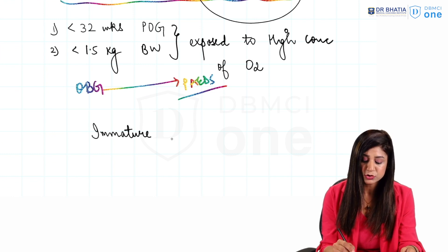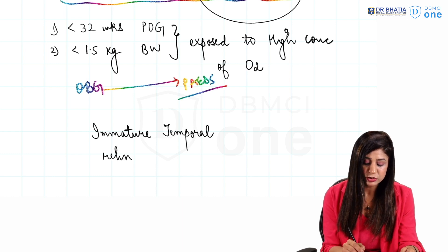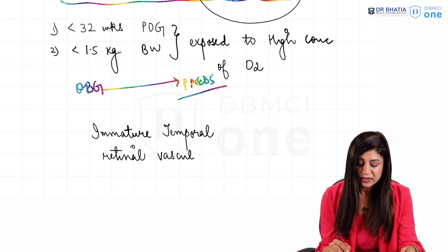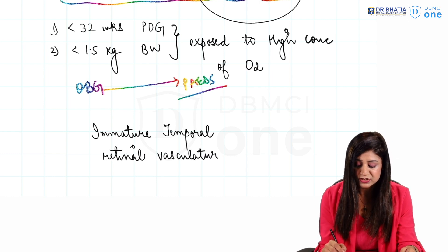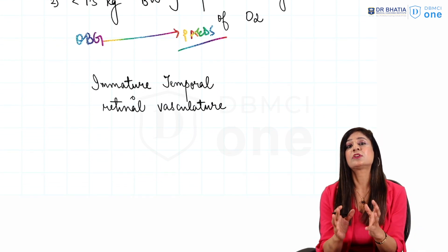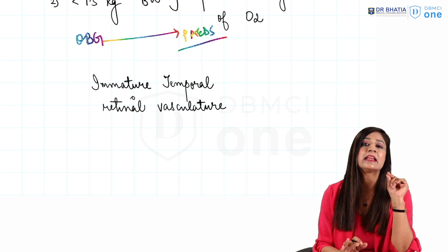temporal retinal vasculature, immature temporal retinal vasculature. Because this vasculature is actually vascularized, this temporal blood vessels will come in the last after 36 weeks. So if the baby is taking birth less than 32 weeks, they don't have these blood vessels.